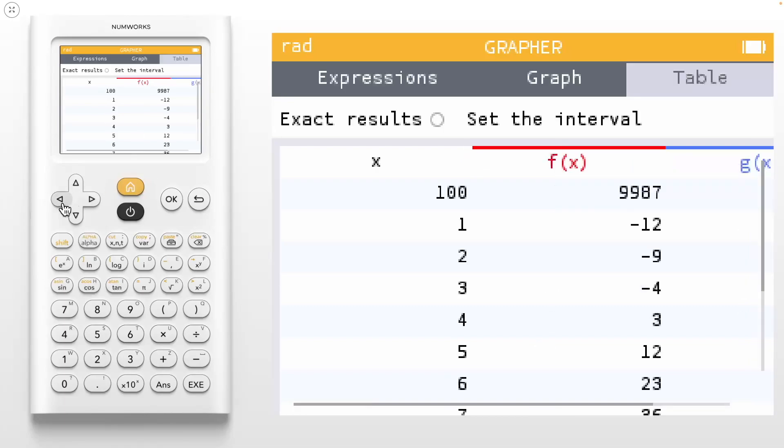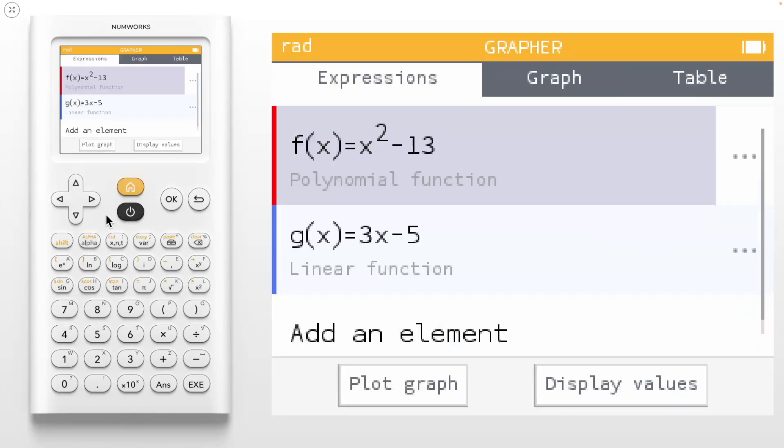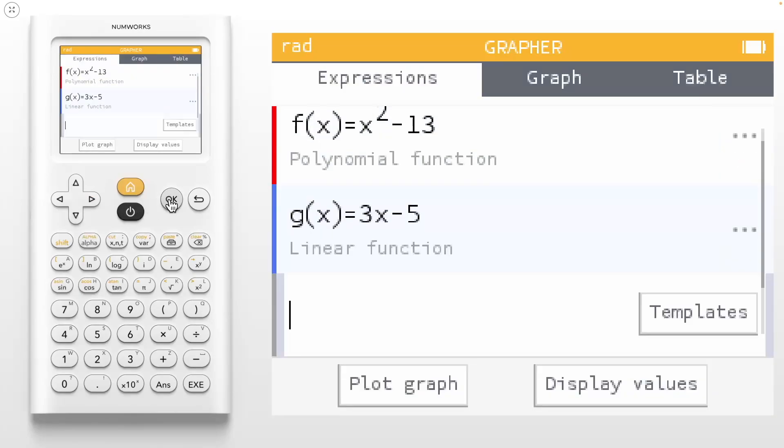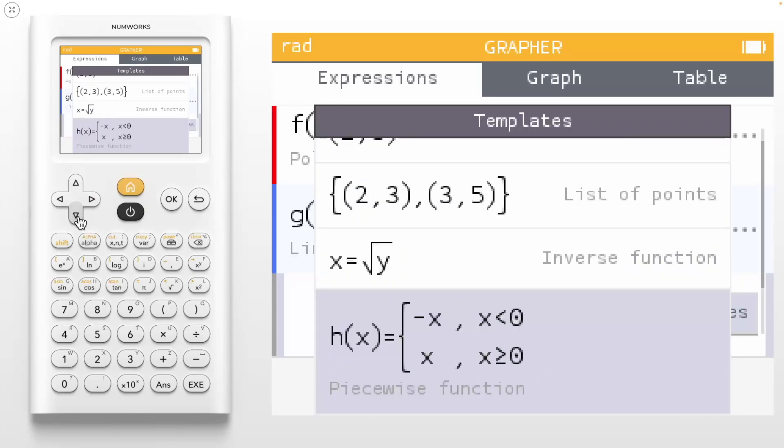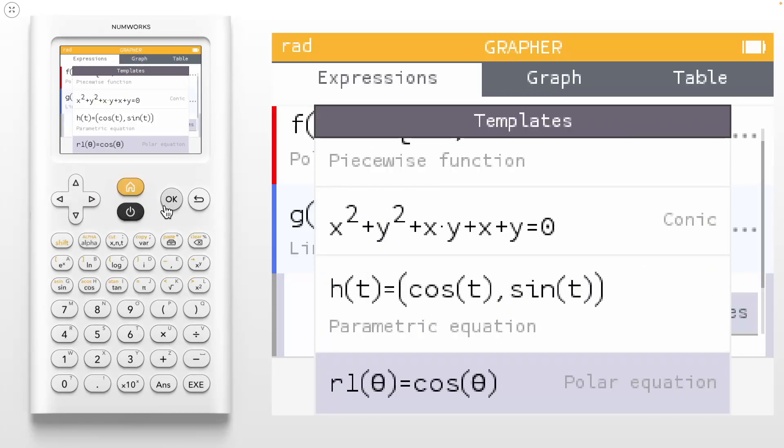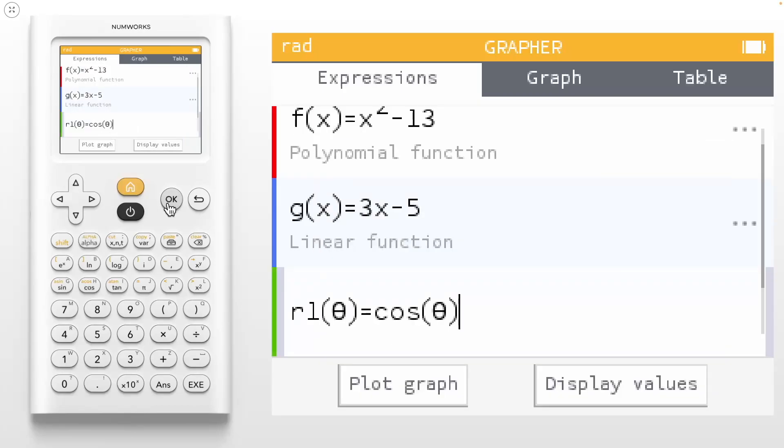The last thing we will look at in the grapher app is some of the advanced graphing. Let's create a polar graph. We are going to add a third expression. You do not have to change modes to graph functions, polar, and parametric equations. Navigate down to the polar template and press OK. Let's add coefficients to create R1 of theta equals 3 cosine of 4 theta.